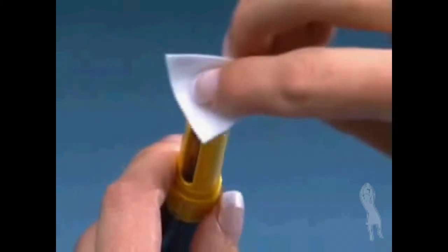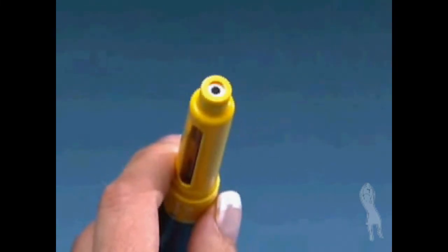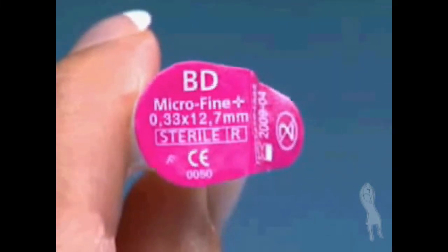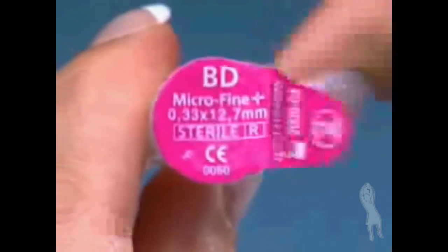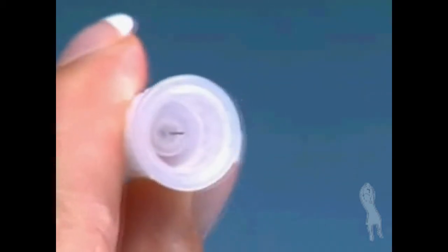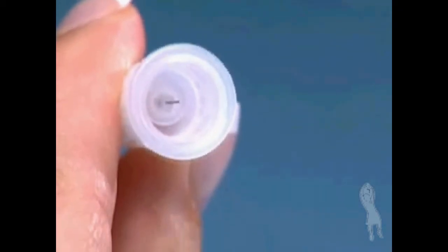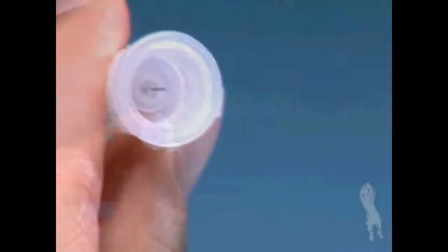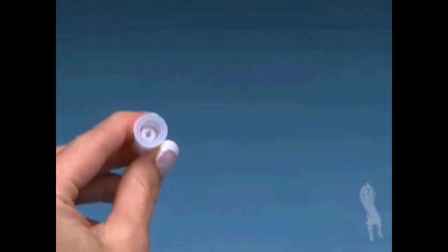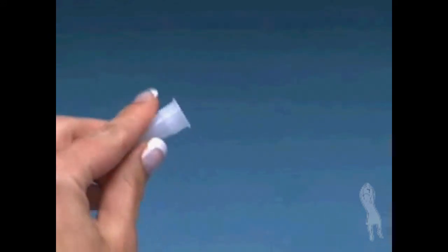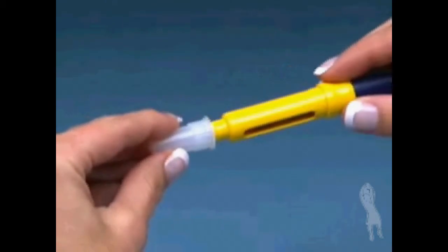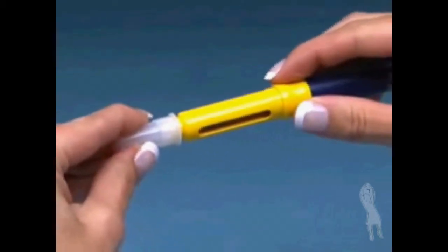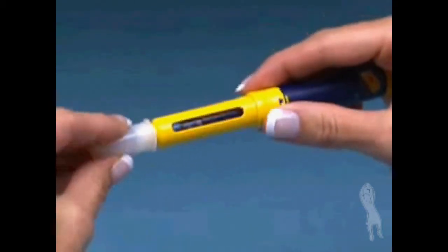Clean the open end of the cartridge holder with an alcohol wipe. Pick up the BD Microfine Pen Needle. Peel off the protective paper seal. Do not touch the needle or place an open needle on any surface. Hold the outer needle shield firmly in one hand and the cartridge holder in the other hand. Push the end of the cartridge holder into the outer needle shield. Screw them tightly together.